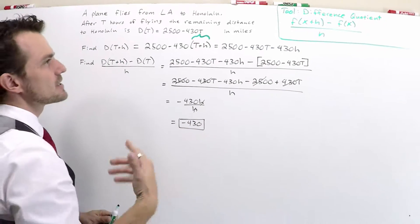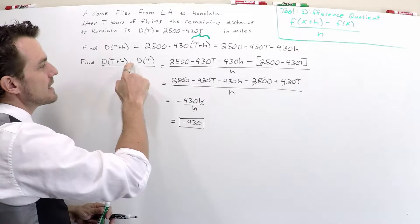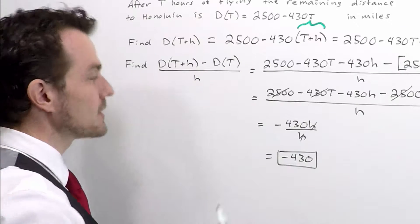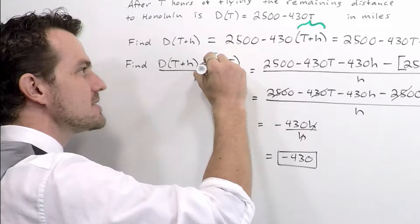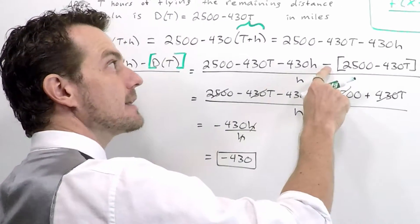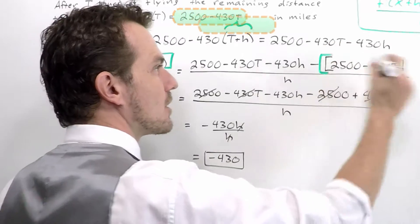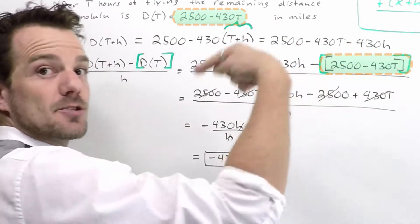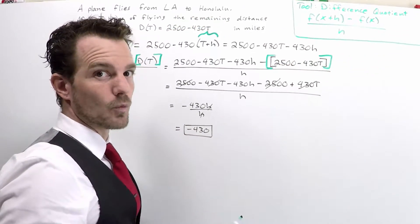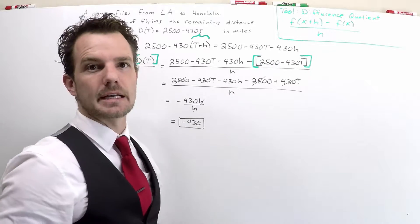The most common mistake made by students with the difference quotient: when they ask us to subtract the original, they oftentimes forget to put a set of brackets or parentheses here. Because you're supposed to subtract the entire original function. If you forget it, you'll end up subtracting just the first term and you're going to get the wrong answer.